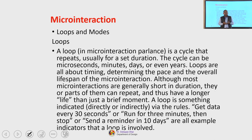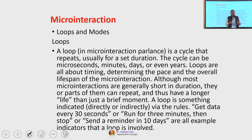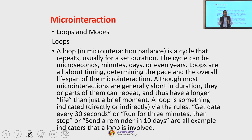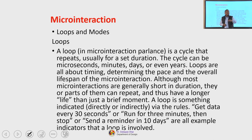The next part and the final one is loops. A loop is a cycle that repeats. In the concept of micro interaction parlance, we call a loop as something that repeats — it is usually for a set duration. The cycle can be microseconds, minutes, days or even years. Loops are all about timing, determining the pace and the overall life span of the micro interaction. Although most micro interactions are generally short in duration, parts of them can repeat and thus can have a longer life than just being a brief moment. A loop is something indicated directly or indirectly via the rules — for example, get data every 30 seconds, or run for 3 minutes then stop, or send reminder in 10 days. These are all indicators that a loop is involved.